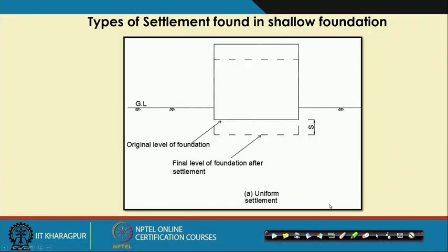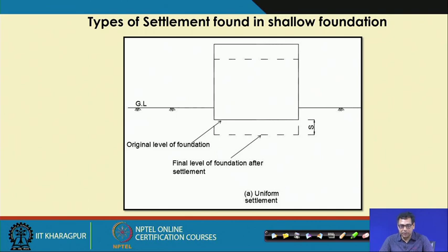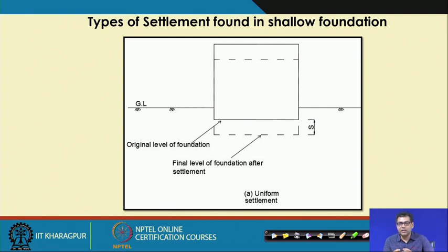Foundation design has two criteria: bearing capacity and settlement. For settlement, the first type is uniform or total settlement, where the foundation settles uniformly — the entire foundation moves from its original level to a new final level by the same amount at all points.